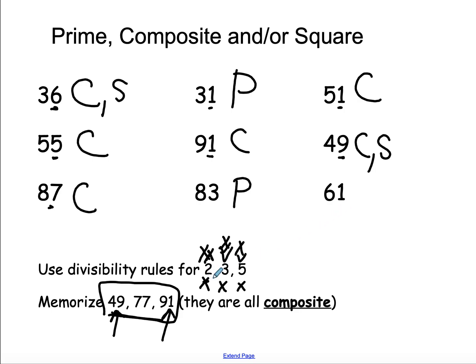And finally, 61, not an even number, so it's not divisible by 2. 6 plus 1 is 7, not divisible by 3. 61 does not end in a 5 or a 0, not divisible by 5. It's not on my memorized list. It is also prime.